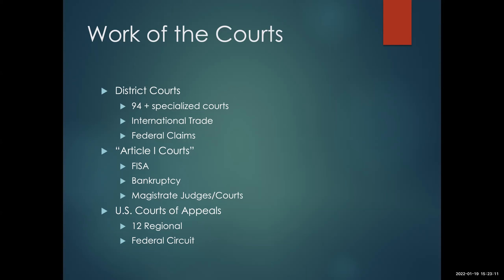The district courts are trial courts — the bottom rung of the hierarchy — with Article I courts filling in some gaps by hearing specific types of cases or motions to support the district court system. Going up one rung in the hierarchy brings you to the US Courts of Appeals. These are appellate courts, meaning you don't bring your case directly to a court of appeals — with a couple of specific exceptions. They act as an intermediary step between the district courts and the US Supreme Court.